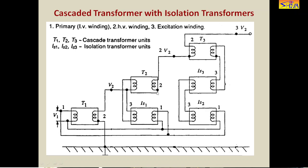The second stage is kept at potential V2, that is the output voltage of the first stage. The output terminal of the second stage is connected to the body of the second cascaded unit, which is kept on insulators and is isolated from the ground at potential V2. Similarly, the third unit T3 is also kept on insulators, and the output of the second stage is connected to its body, so the third stage is at a potential of 2V2 with respect to ground. The output at the second stage is 2V2 and at the third stage is 3V2 with respect to ground.